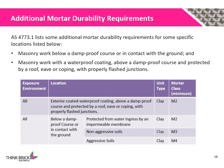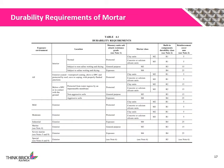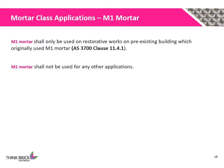AS4773.1 lists some additional mortar durability requirements for specific locations, including masonry work below a damp proof course or in contact with the ground, and masonry work with a waterproof coating above a damp proof course that is protected by a roof. The minimum mortar classes for these conditions are listed below, and these durability requirements are collectively summarised in Table 4.1 of AS4773.1. M1 mortar shall only be used on restorative works on pre-existing buildings which originally used M1 mortar, and shall not be used for any other applications.